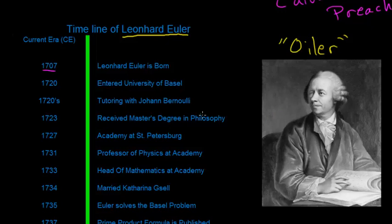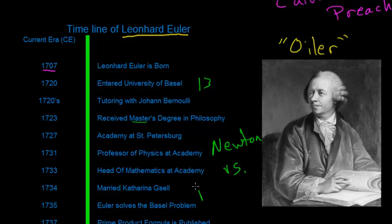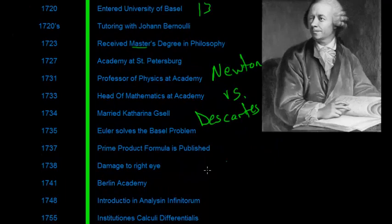It was in 1723 that Euler graduated from the University of Basel with a degree in philosophy — a master's degree, though note that it's not the same kind of master's degree we have today. He entered the university at age 13 and it only took about three years. He received his degree based off of comparing the philosophies of Isaac Newton and René Descartes, who is famous for introducing the coordinate plane — the XY plane.